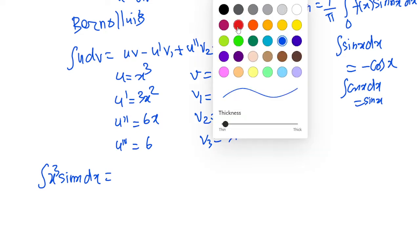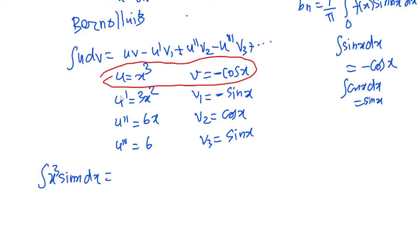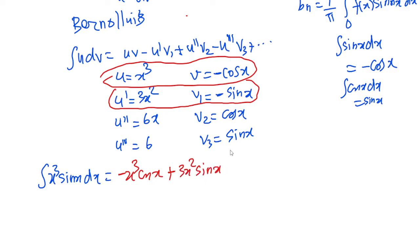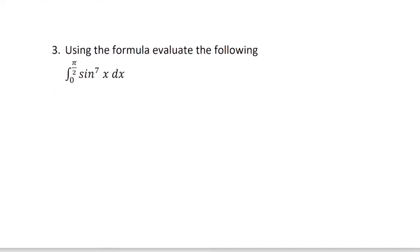Using the u and v formula — u·v minus u'·v1 plus u''·v2 and so on — you combine the terms. So ∫x³·sin(x) dx: this is a 2-mark problem solved using integration by parts.